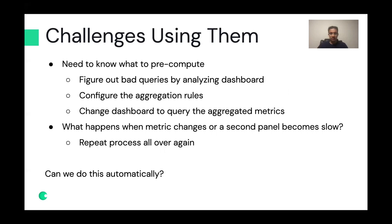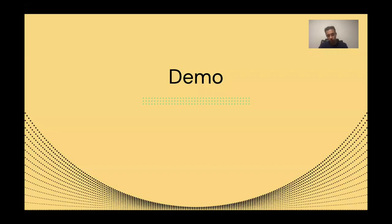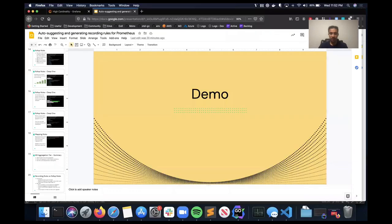In either of these cases there are challenges. You need to figure out what to pre-compute, which means finding bad queries by analyzing dashboards, then configuring the aggregation rules, and then changing the dashboard to point to aggregated metrics. After all that, you may not have changed every panel — and what happens when a metric changes or a second panel becomes slow? You end up having to repeat the process all over again. So is it possible to do this automatically? We're going to show you a way where we can do this reasonably automatically.